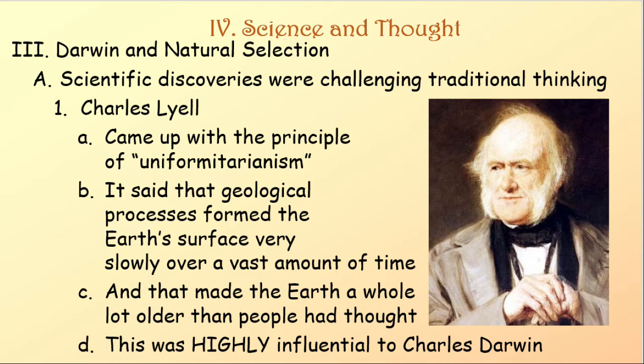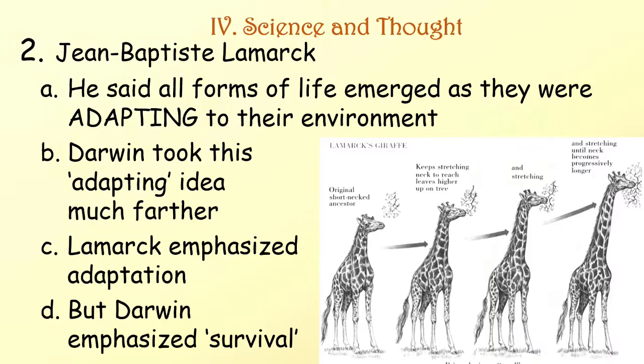Darwin and Natural Selection. Scientific discoveries were challenging traditional thinking. First, we had Charles Lyell, who came up with the principle of uniformitarianism. Uniformitarianism said that geological processes formed the Earth's surface very slowly over a vast amount of time, making the Earth a whole lot older than people had thought. This was highly influential to Charles Darwin. Then you had Jean-Baptiste Lamarck, who said that all forms of life emerged as they were adapting to their environment. Darwin took this adapting idea much further.